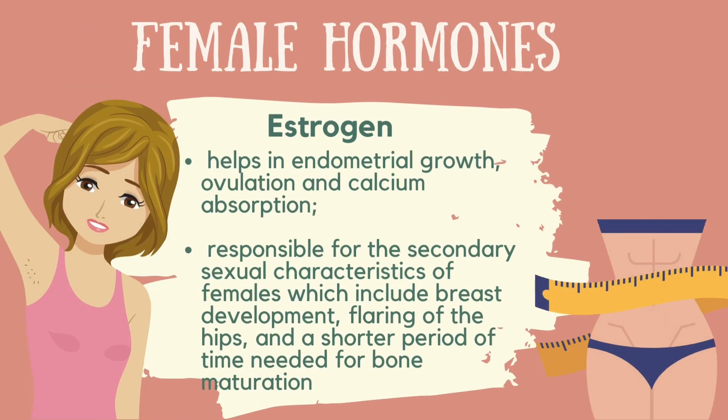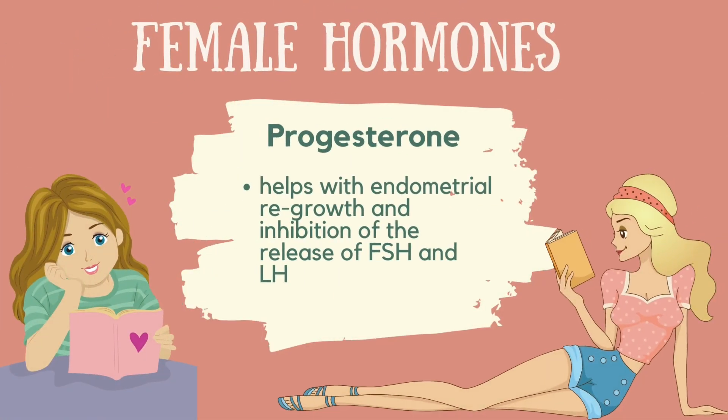Now, let us discuss the female hormones. First, we have estrogen. Estrogen helps in endometrial growth, ovulation, and calcium absorption. They are also responsible for the secondary sexual characteristics of females. Another one is progesterone. Progesterone helps with endometrial regrowth and inhibition of the release of FSH and LH.